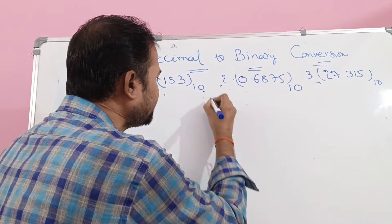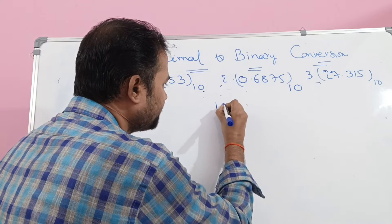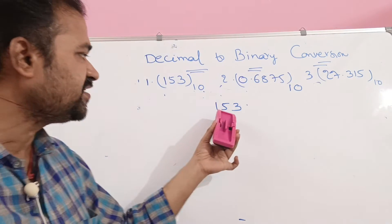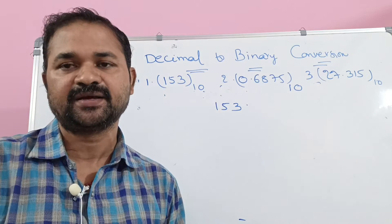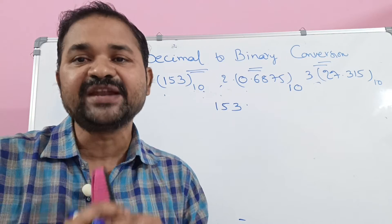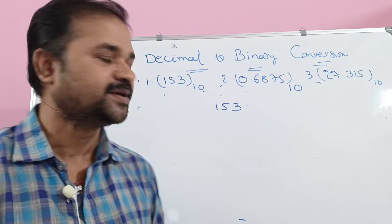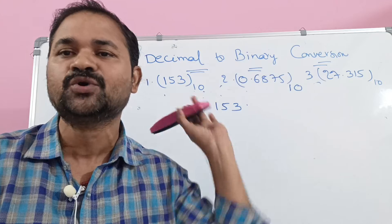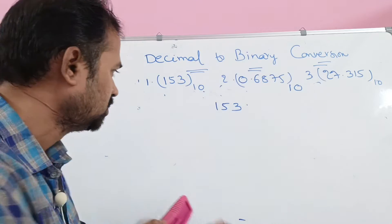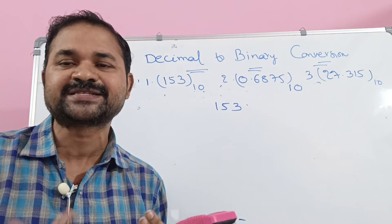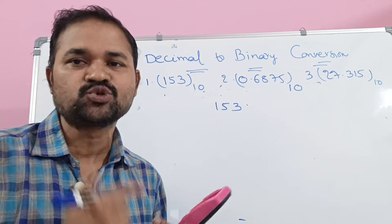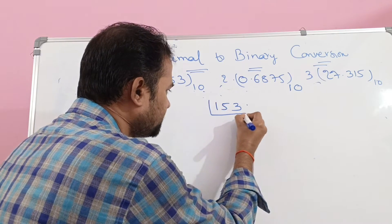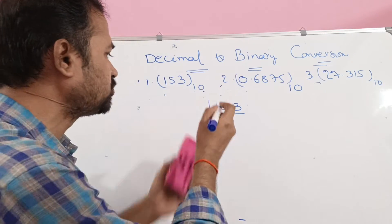Let us see the first example: 153 base 10. Here we are having only the integer part. If we have an integer part, then we have to divide that number by 2, because binary contains 2 symbols. So let us divide 153 by 2.